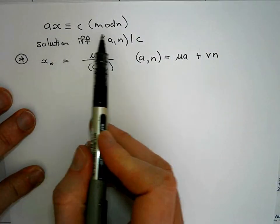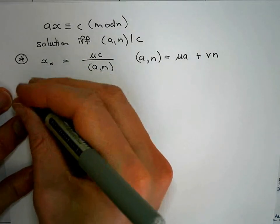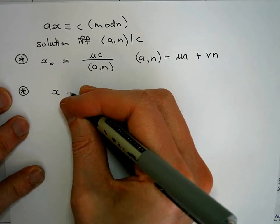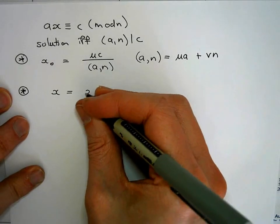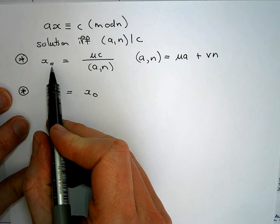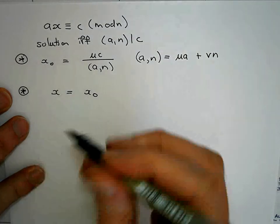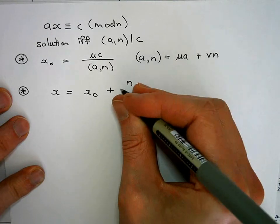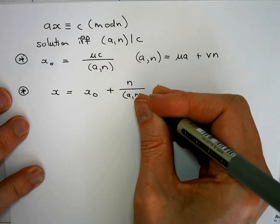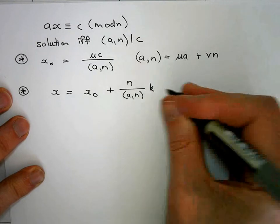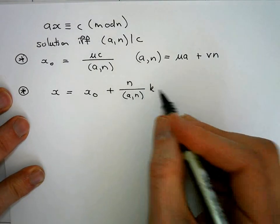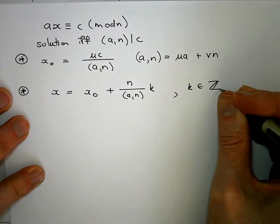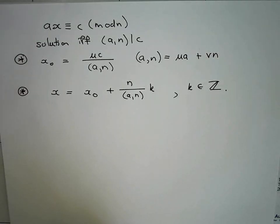Now of course if this congruence has a solution, then it has infinitely many solutions. So the other solutions are given in this way: X is, we start with the specific solution we got and then we can add to it multiples of N divided by GCD of A and N. So multiples of this number where k ranges over the integers. So that's the first fact.